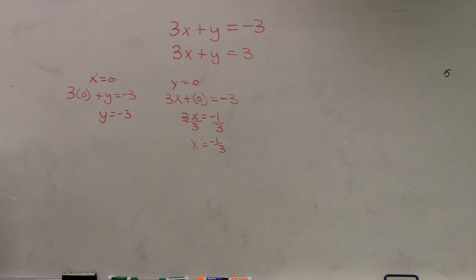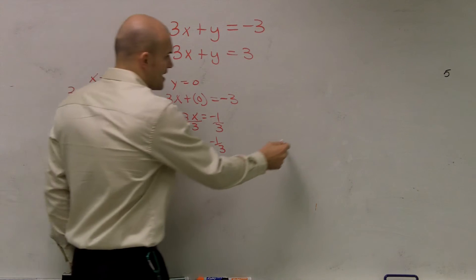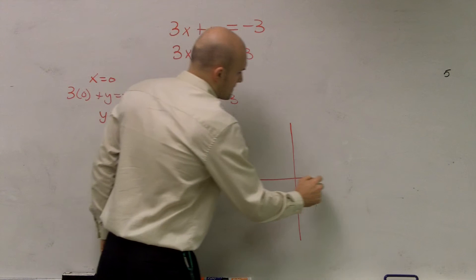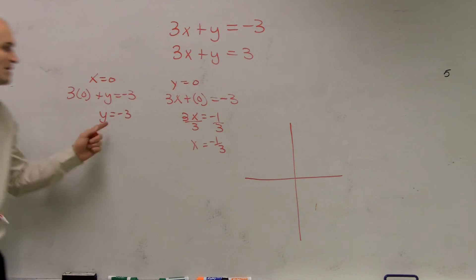So what do those two points mean? Well, if I was to graph this, remember, by putting 0 in for x, what I did was I determined what the intercepts are, where the graph crosses the axis.